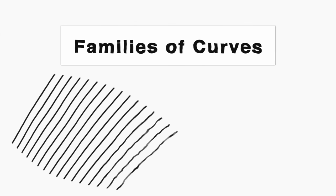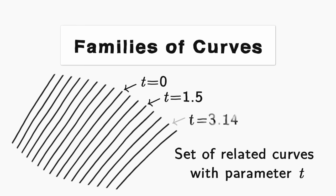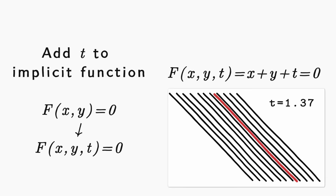Next let's talk about families of curves. A family of curves is just a set of related curves, where each curve is described by a parameter t. So like this curve might be t equals zero, and this one t equals 1.5, and this one t equals 3.14. We can make our implicit function give an entire family of curves by adding a parameter t. So f of x, y, t is equal to x plus y plus t equals zero. That would be a set of lines. Plugging in a t gives you a new line in the family, f of x, y equals zero. Here it would shift up and down.